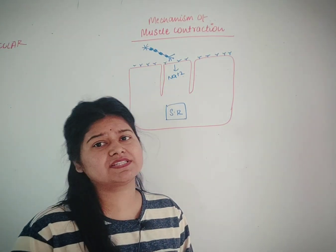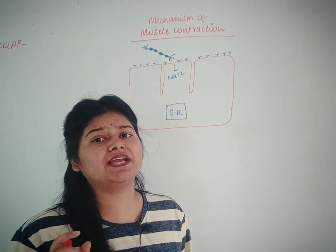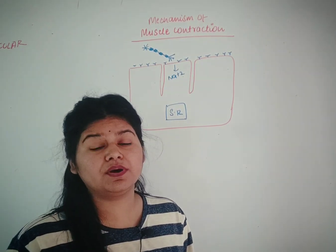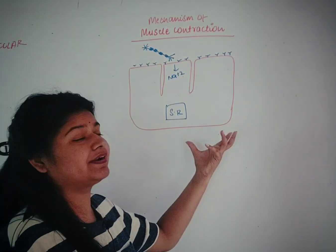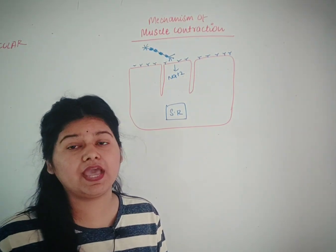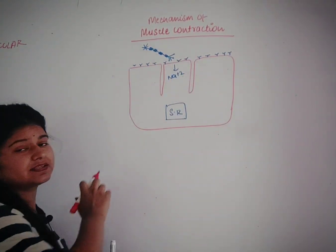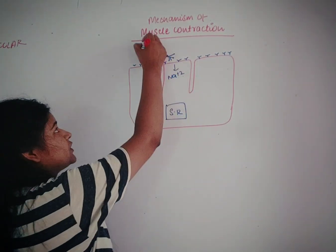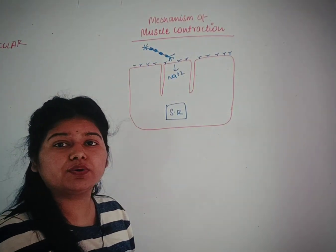First we have to understand that this mechanism of muscle contraction is done with the help of the central nervous system via the motor neuron. The contraction of our muscle is under the control of the CNS, that is the central nervous system. This is a diagram of a muscle and this is called the motor neuron.